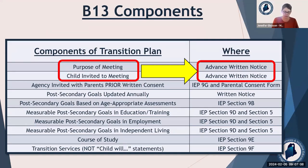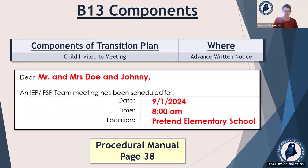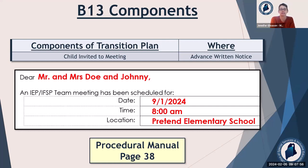First thing: advance written notice. The advance written notice needs to have the purpose of the meeting, and the child needs to be invited to any meeting where transition is discussed. Check off post-secondary goals and transition services on your advance written notice. If you're a high school teacher, you might want to just check it on every single advance written notice — that way you're covered. Best practice is to either put the child's name in the salutation or send them their own advance written notice. If they are just in the list of attendees on the second page, that is compliant. The procedural manual talks about this on page 38, and there is a link to it at the end of this PowerPoint.